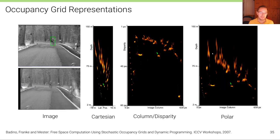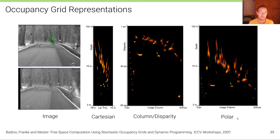Here are some examples of how bird's-eye view occupancy likelihood maps could look, showing examples for the Cartesian, column/disparity, and polar representations. In each of these representations you can see this pedestrian highlighted as a yellow blob, marked by the green arrow.